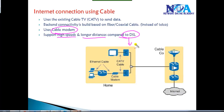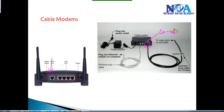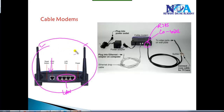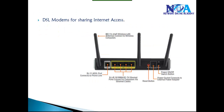Cable modems support much higher speed data transfer rates and longer distances compared to DSL. They typically come with coaxial connectors, and now also include RJ45 connectors, allowing you to share the internet connection over LAN and connect devices wirelessly. Instead of using a telephone line, existing cable TV operator infrastructure is used to provide WAN connections.